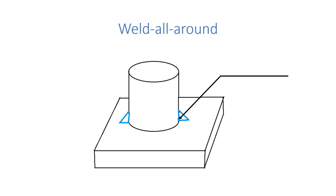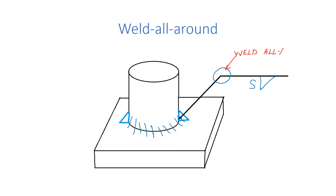Now suppose we want to weld a circular rod to a plate. We have placed the circular rod over the plate and we want to weld with a fillet weld of size S. We want to instruct that welding is to be done all around the circular rod. So we put a circle in the symbol where the reference and arrow lines are intersecting — this means weld all around the rod. This symbol is known as the weld all around symbol.